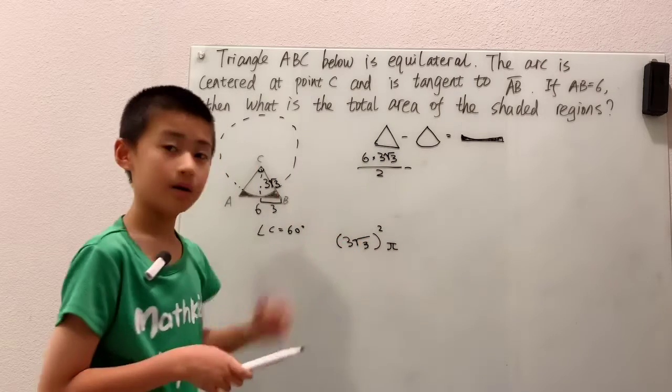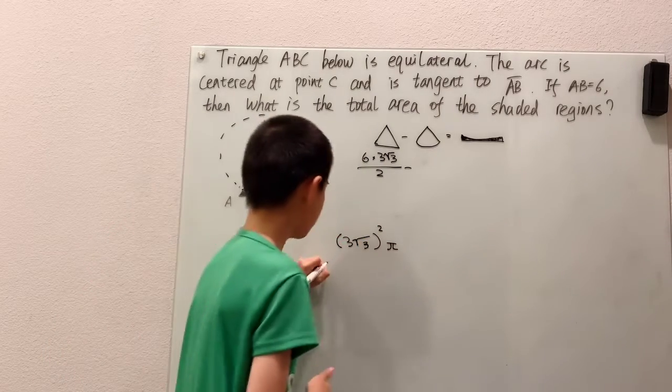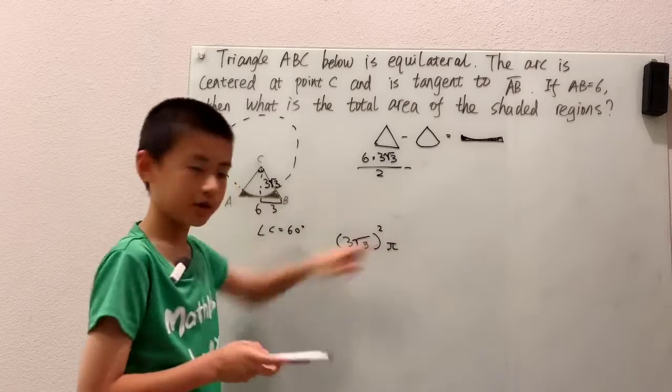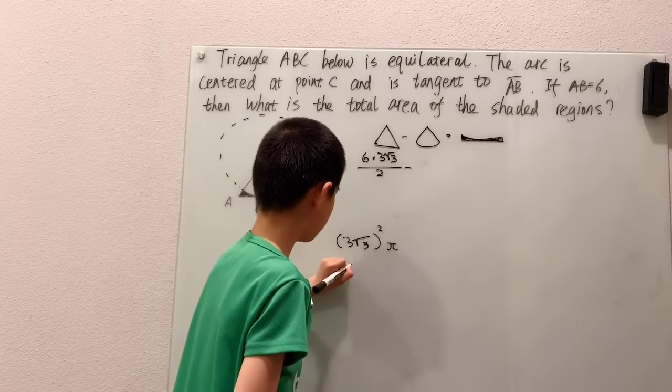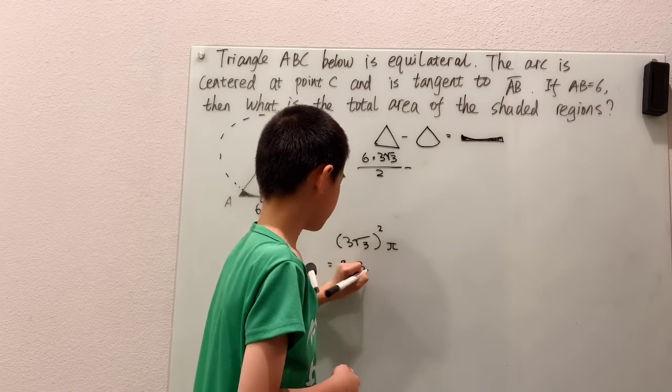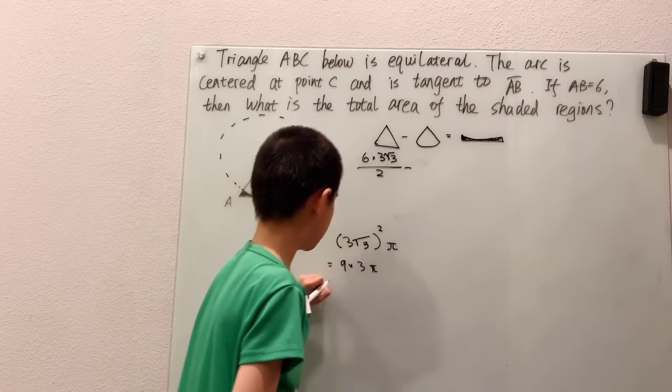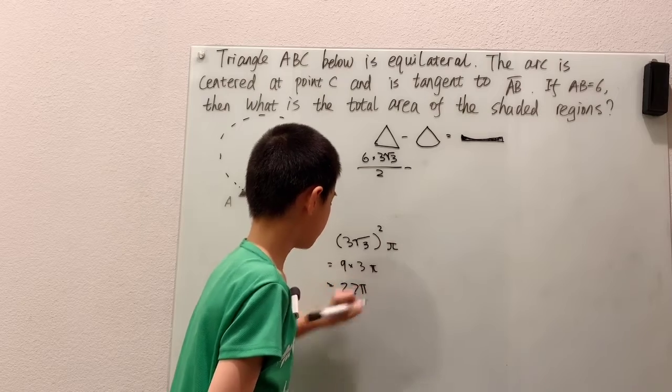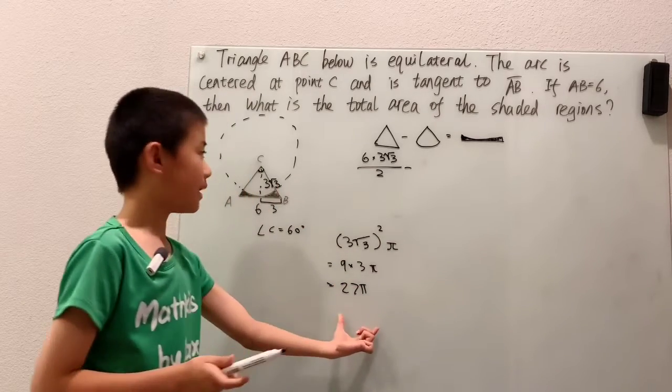and then multiply by pi, and, well, here we have three squared is nine, times root three squared, which is three, and times pi, that's just 27 pi.